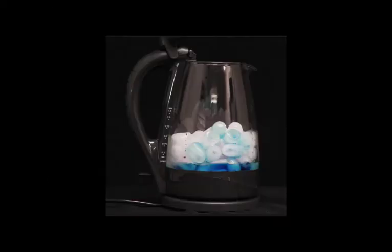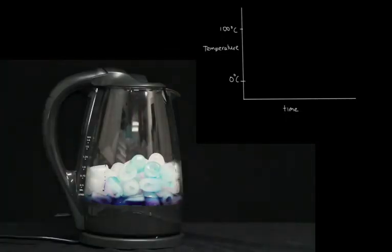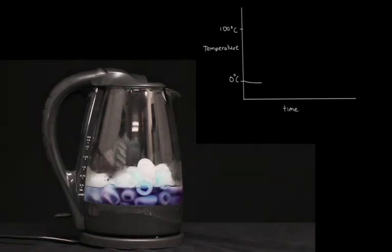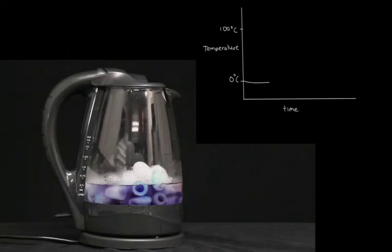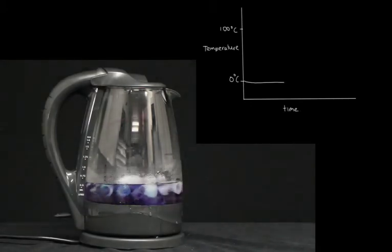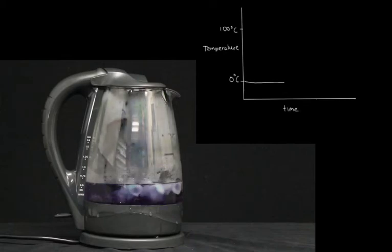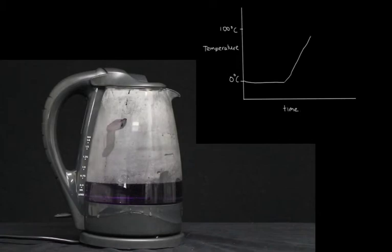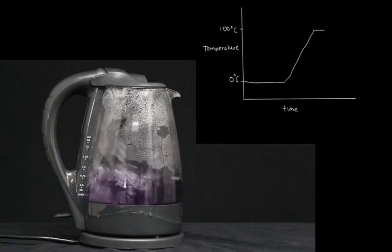What happens to a kettle filled with ice as we add energy at a constant rate — i.e., a constant power? When the power goes on and the kettle's heated, first the added energy goes into melting the ice, and while this happens, the temperature remains at a constant 0 degrees C. When the ice is finished melting, the power then goes into heating the water and increasing its temperature from 0 degrees C to 100 degrees C. When it gets to 100 degrees C, the extra heat energy goes into boiling the water and converting it into gas.